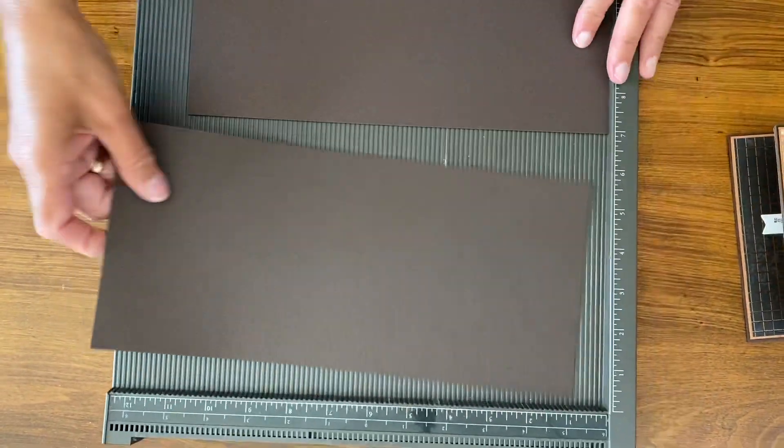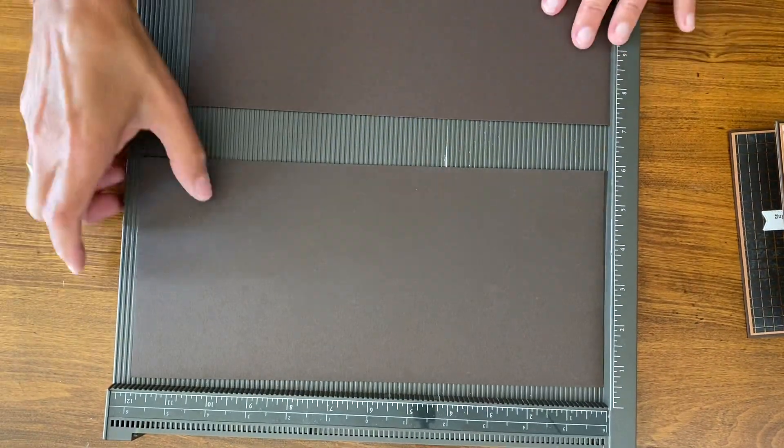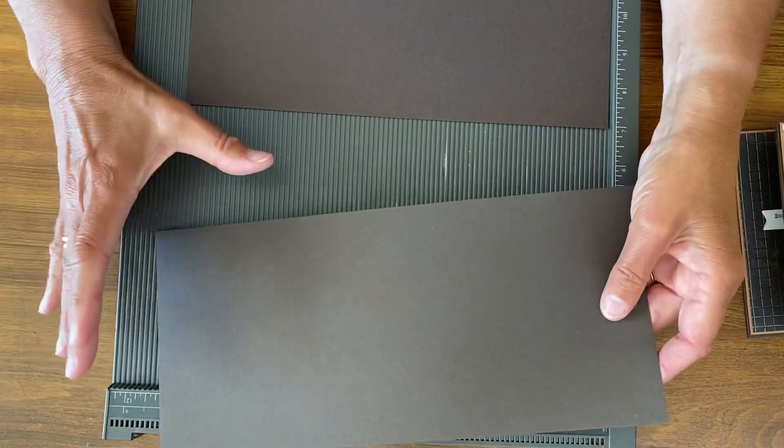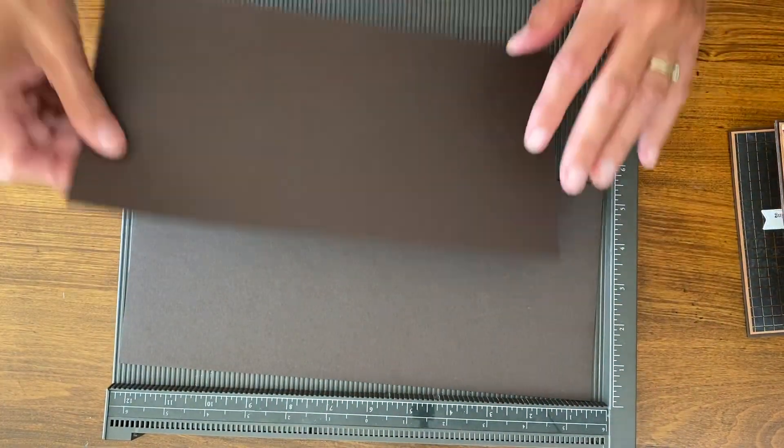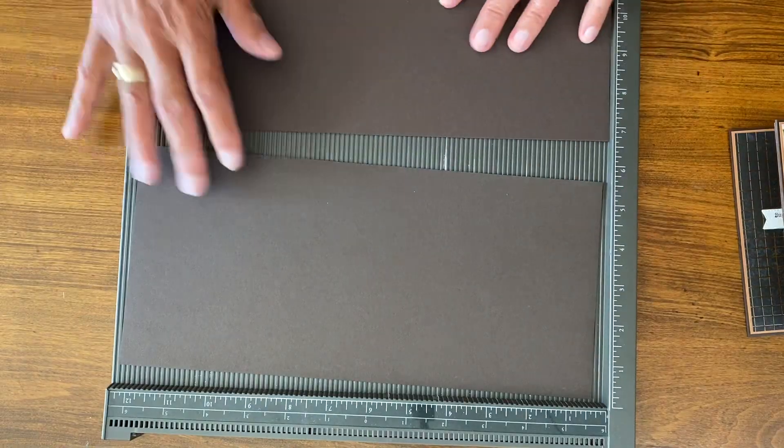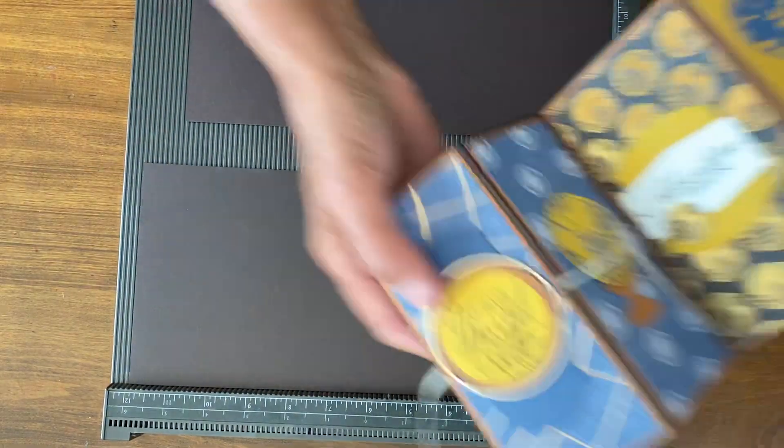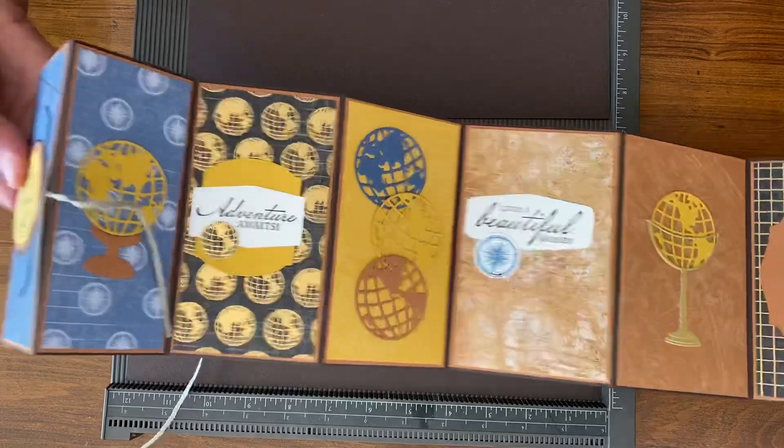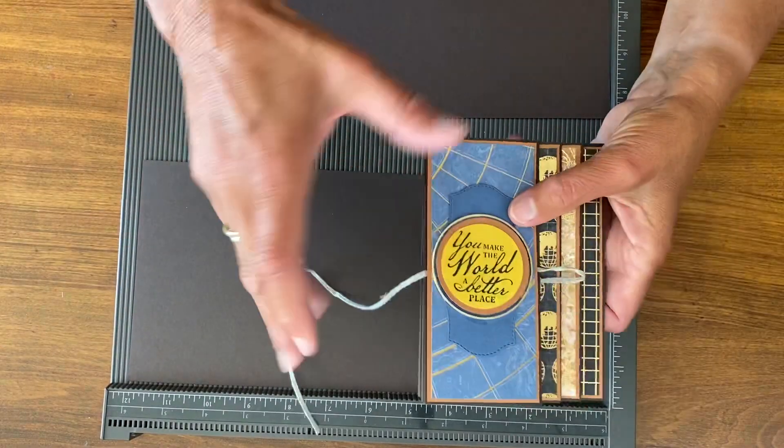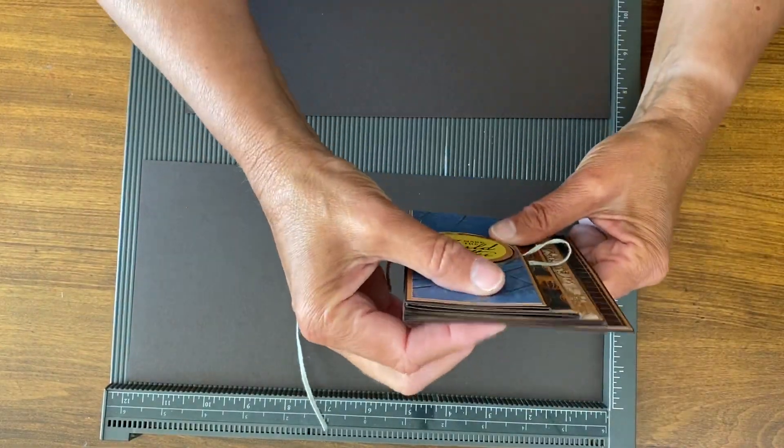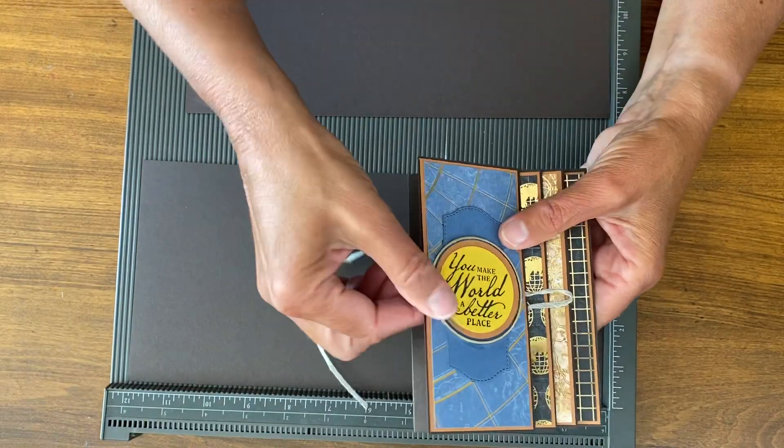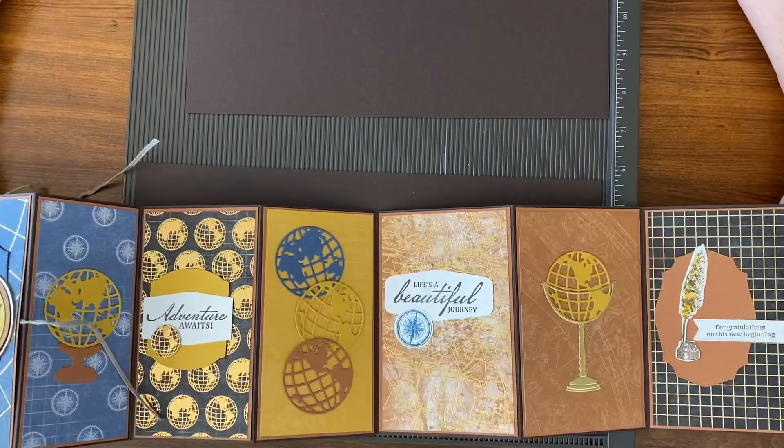To make this I have two pieces of cardstock: a five and a half by twelve and a five and a half by eleven, so one from each paper pack. When this folds up it still is a regular card size. Now it's going to be thick so you might have to pay a little extra, but it's still going to be just that nice little card size.